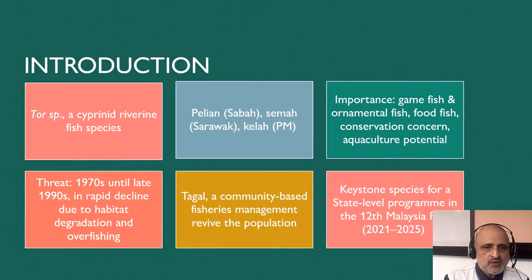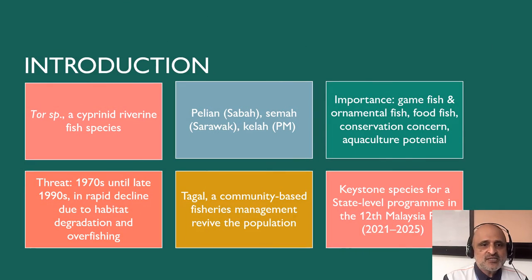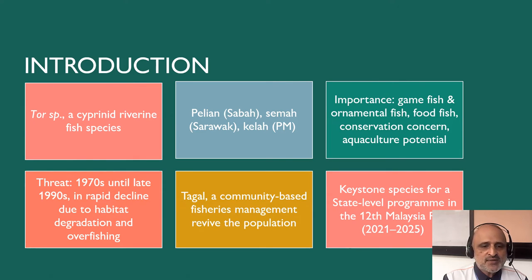Tor is a Cyprinid riverine fish species related to carps. It is commonly known as Pelian in Sabah, Semah in Sarawak, and Kelah in Peninsular Malaysia. Tor is an important game fish as well as an ornamental fish. It is a source of food to native villagers, has aquaculture potential, and is a high value aquaculture resource.